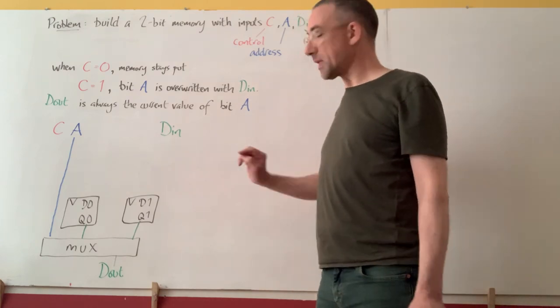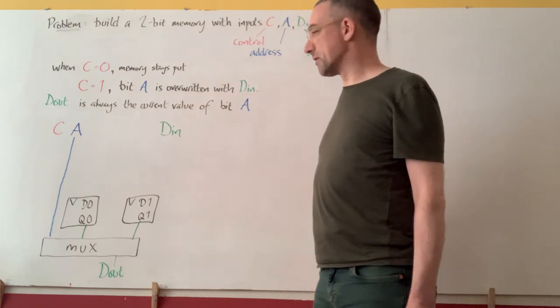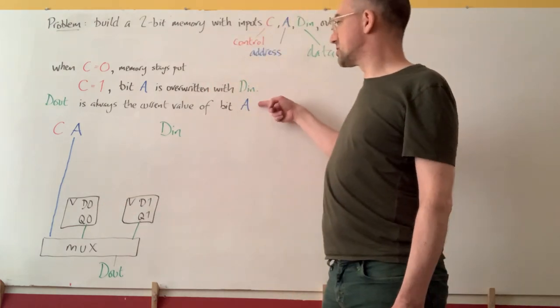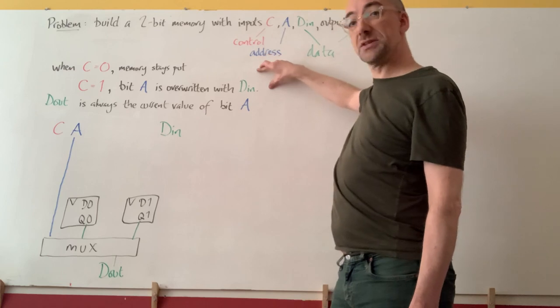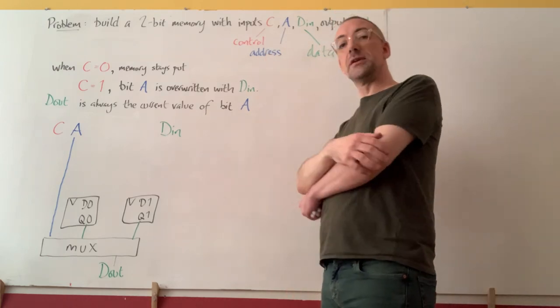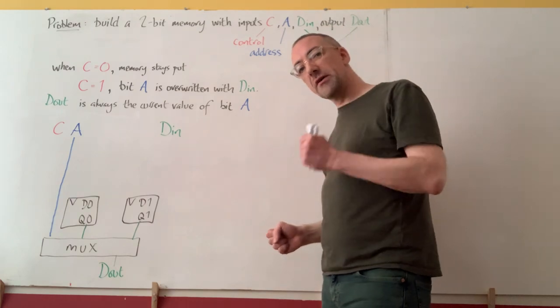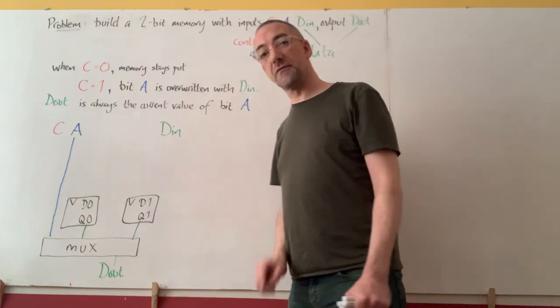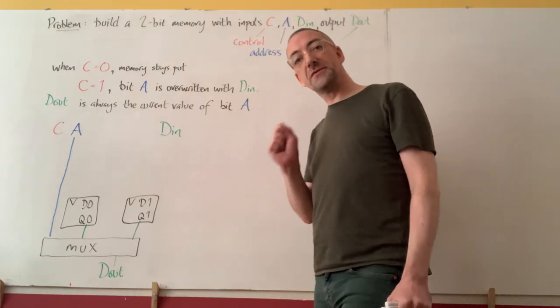Okay, so now we need to figure out what controls the D signals of these circuits. We've discharged this obligation, but we still have to think about this one. Well, we don't have to reach terribly far to realize that each bit of the memory does one of two things.